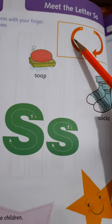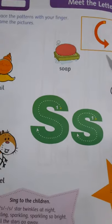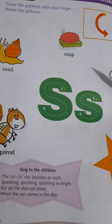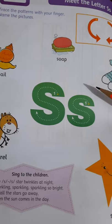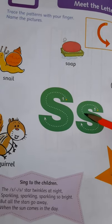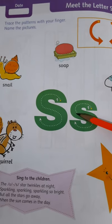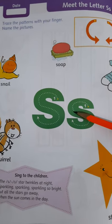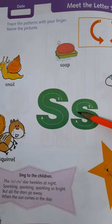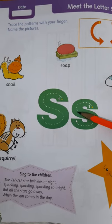You have to trace the patterns with your two fingers. Now read vocabulary words which are starting from the letter S. First of all, you have to know what is the phonic sound of S. /s/ — that is the phonic sound of S. What is the phonic sound of S? /s/.